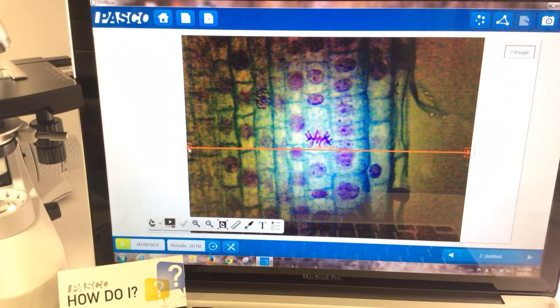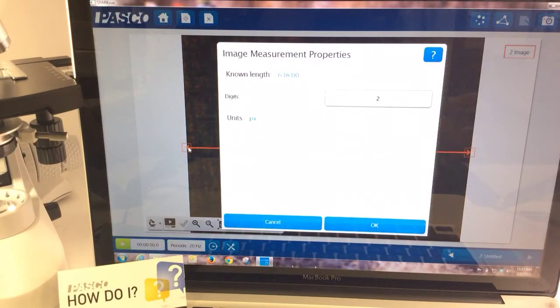I know it's difficult to see on the screen there, but right now my measurement is given in PX or pixels, but I want to change that to millimeters or micrometers. So I can click on the end of one of the arrows and it will bring up my measurement properties window.